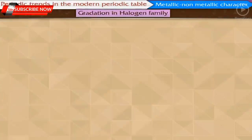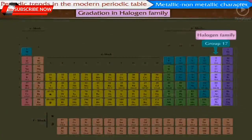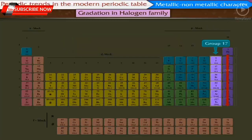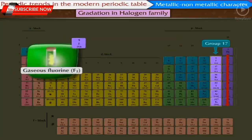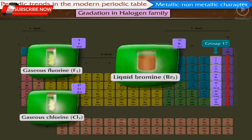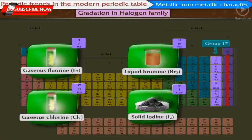Gradation in Halogen Family: Group 17 contains the members of the halogen family. All these elements have the general formula X₂. There is a gradation seen in their physical state going down the group: fluorine F₂ and chlorine Cl₂ are gases, bromine Br₂ is a liquid, while iodine I₂ is a solid.